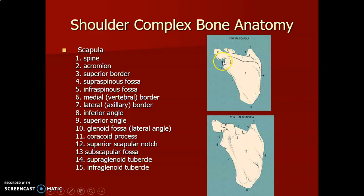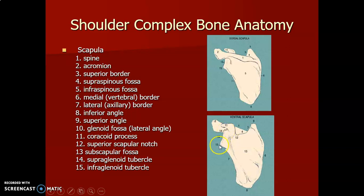This is the lateral border, the medial border, inferior angle and the superior angle. This is the coracoid process, acromion, supraglenoid and infraglenoid tubercle, and glenoid cavity. This is the anterior surface where the subscapular fossa is located. This is your suprascapular notch, and the medial and lateral border of the scapula.